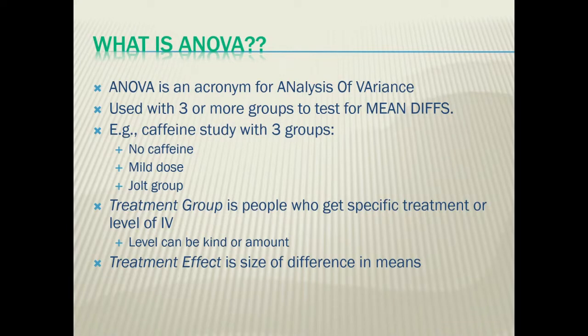ANOVA is an acronym for analysis of variance. We use it with three or more groups and we're looking at the mean differences. Maybe you have a group of people and they have three groups. Some of them have no caffeine, some have a mild dose of caffeine, some have a huge jolt dose of caffeine, and then they have to go take a test or perform something. That would be where we would consider maybe an ANOVA. The treatment group is the specific group or level of independent variable that the participant is in. And when we talk about level, this can either be the kind or the amount. And the treatment effect is the size of the difference in the means.